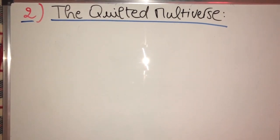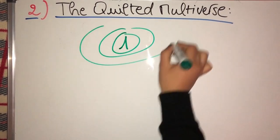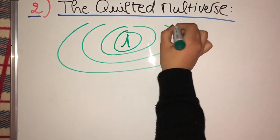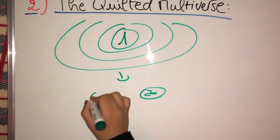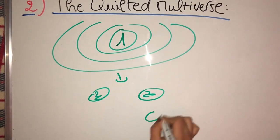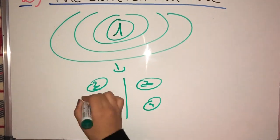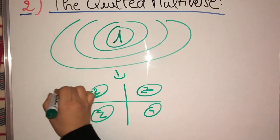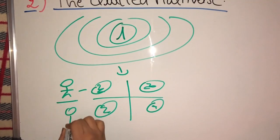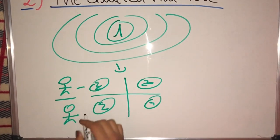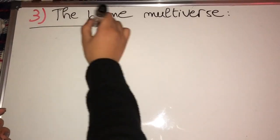Second, the quilted multiverse. It is one universe that is very very big, big enough to have a lot of identical planets or Earths. In each Earth you can find your identical twin — but the universe is so big that you can never meet them.